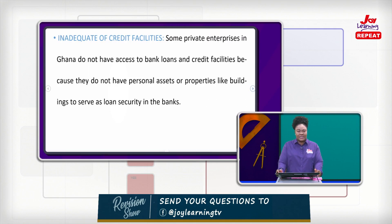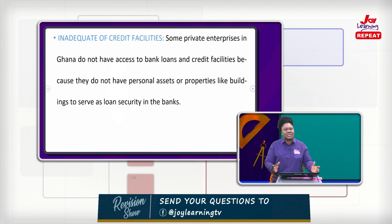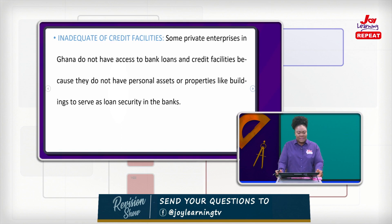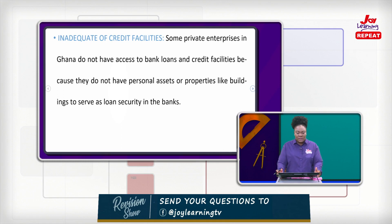Inadequate credit facilities: some private enterprises in Ghana do not have access to bank loans and credit facilities because they do not have personal assets or properties like buildings to serve as loan security. For example, if you want to establish a business but don't have any building or office as collateral to give to the bankers, then you can't continue with your business.